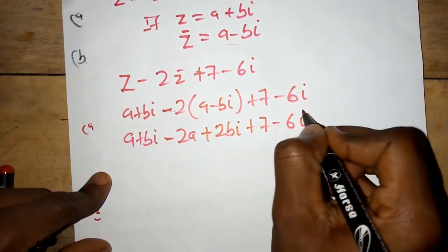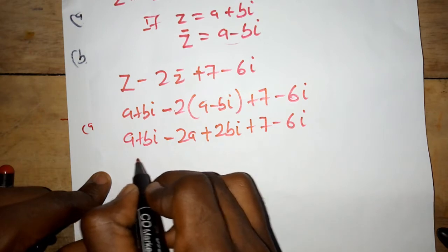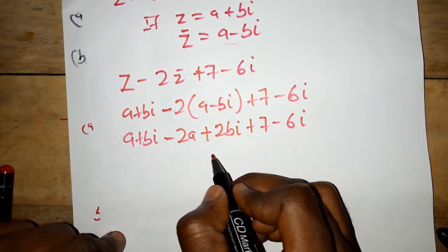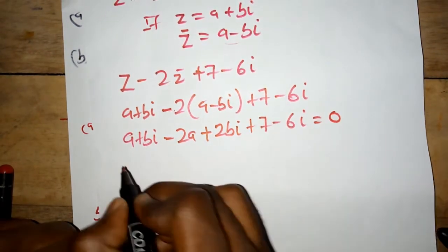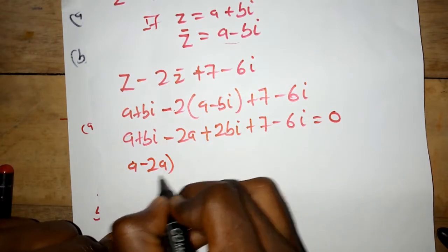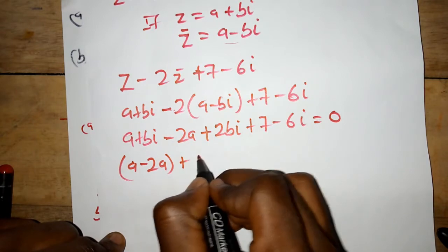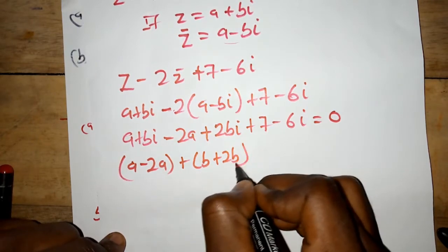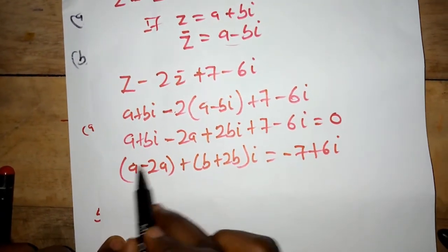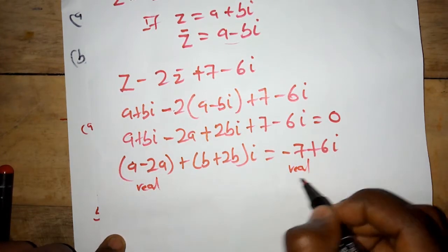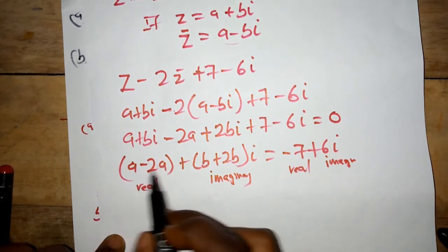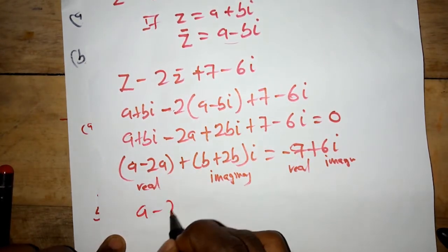We group the real parts and imaginary parts. Taking everything to one side, the real part gives us a minus two a plus seven, and the imaginary part gives us b plus two b minus six. Setting this equal to zero, we equate the real part to zero and the imaginary part to zero.